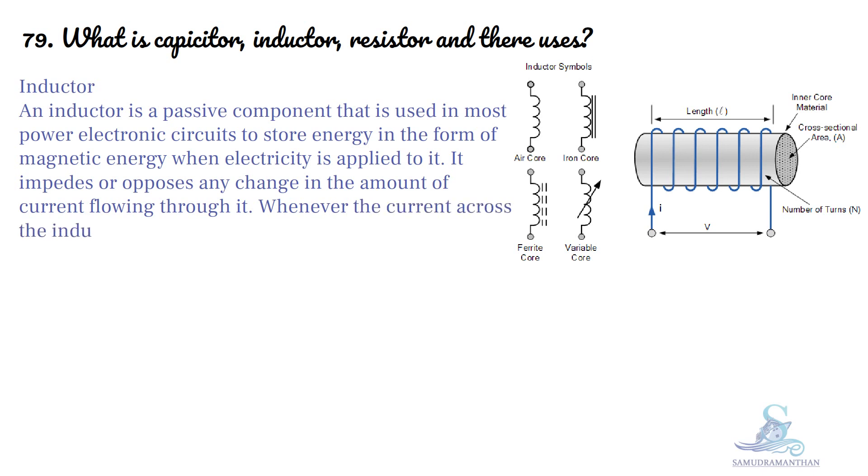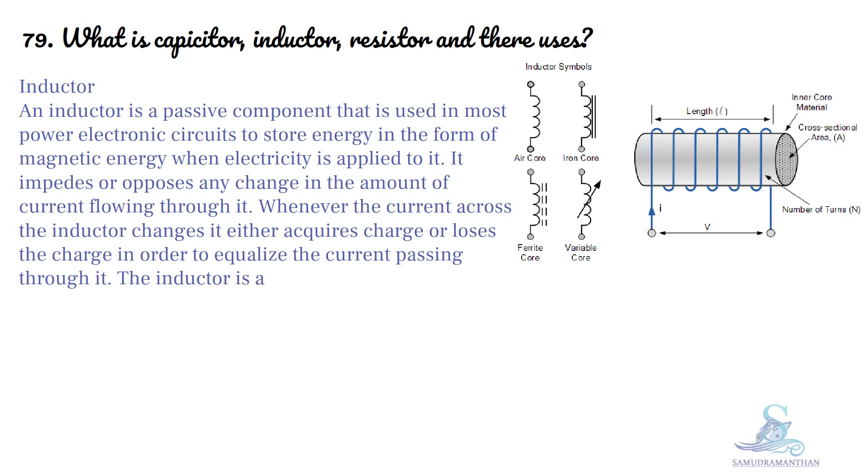Whenever the current across the inductor changes, it either acquires charge or loses the charge in order to equalize the current passing through it. The inductor is also known as a choke, reactor or coil.